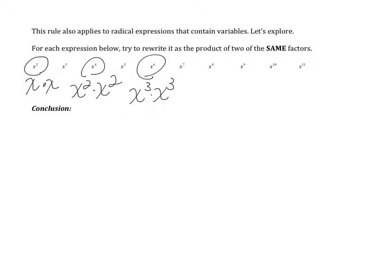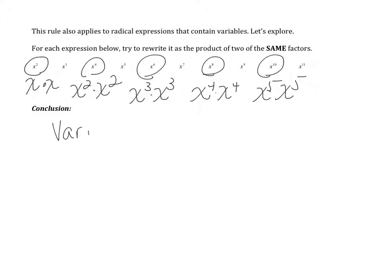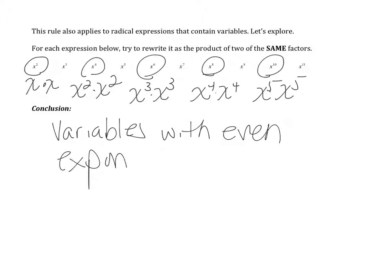Remember, when you're multiplying variables of the same base, you can add the exponents. So we're adding exponents when we think through that. X to the eighth is x to the fourth times x to the fourth. X to the tenth would be x to the fifth times x to the fifth. So if you notice, the ones we can break into two of the same factors are all the variables that have even exponents. So variables with even exponents are perfect squares.